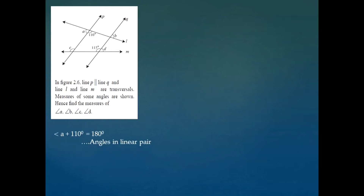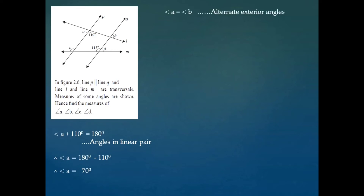We start with angle A plus 110, which is equal to 180 degrees, because these two are angles in a linear pair, so their sum will be 180 degrees. Transferring 110 to the right hand side, we get angle A is equal to 180 minus 110, that is angle A is equal to 70 degrees.